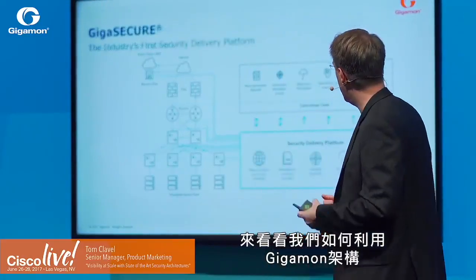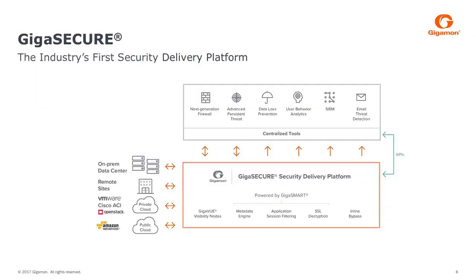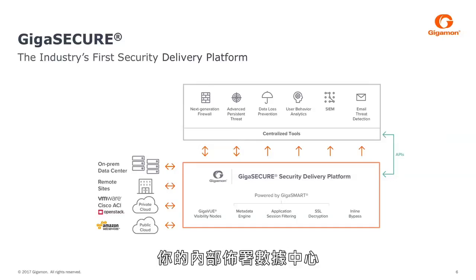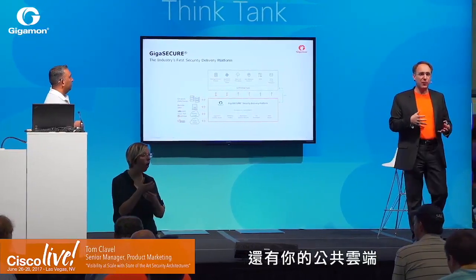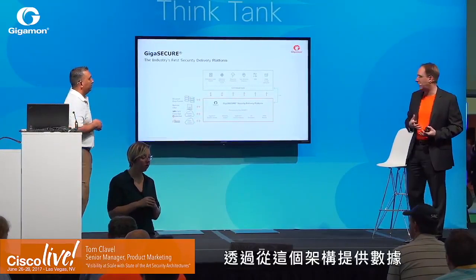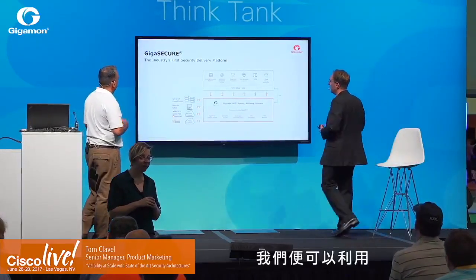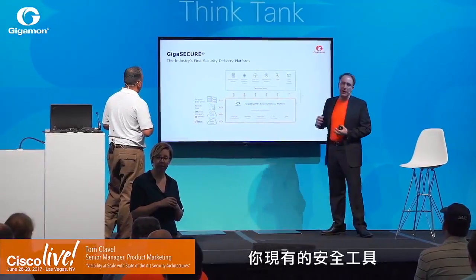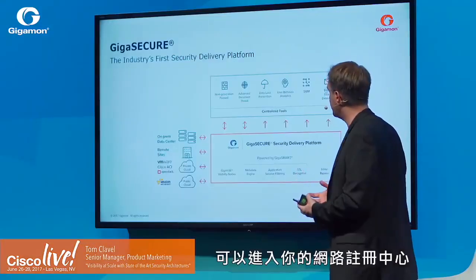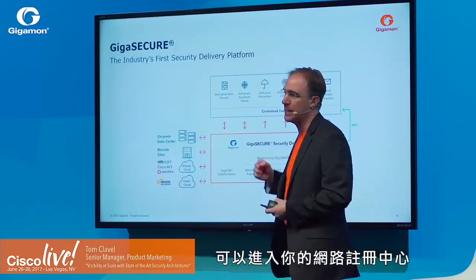Let's see exactly how we do this with the Gigamon architecture. Here we have the example of the GigaSecure security delivery platform. That platform is able to connect to your on-premise data center, to your remote site, to your private cloud, and your public cloud as well. By feeding data from these architectures, we can leverage your existing security tools, because those tools are now able to access the entire array of your network.